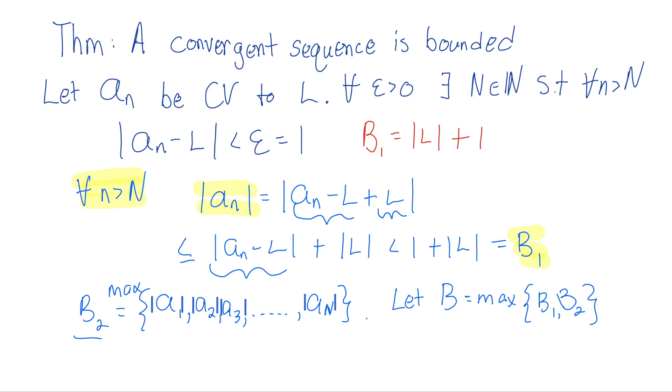And so we've bounded the first N terms, and we've bounded all the terms after that, hence the sequence must be bounded overall, which is what we wanted to show. And so the statement really is here, for all little n in the natural numbers, we have our sequence a sub n is less than, I guess I'll say less than or equal to B. That's what it means for it to be bounded. We've just shown a convergent sequence is bounded.